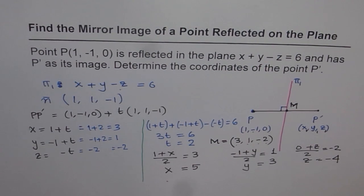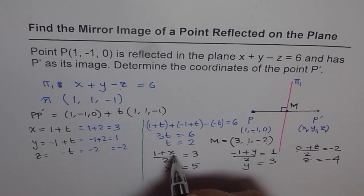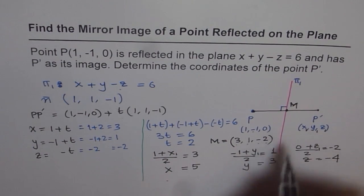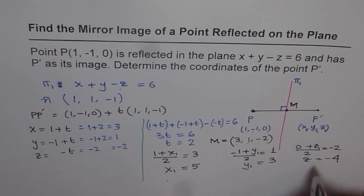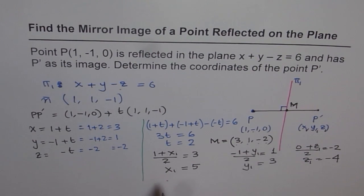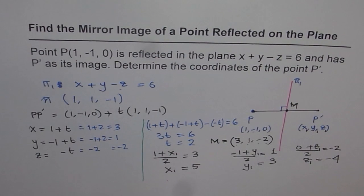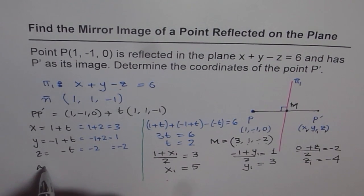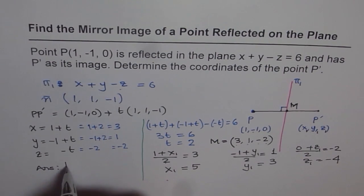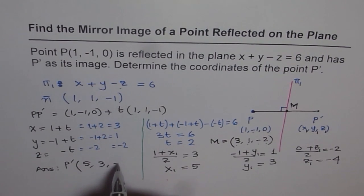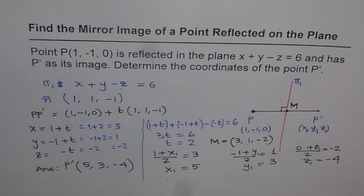So the coordinates (x1, y1, z1) are the mirror image points — the coordinates of P dash. Therefore, the mirror image P dash is (5, 3, -4). That is how we can solve these questions.